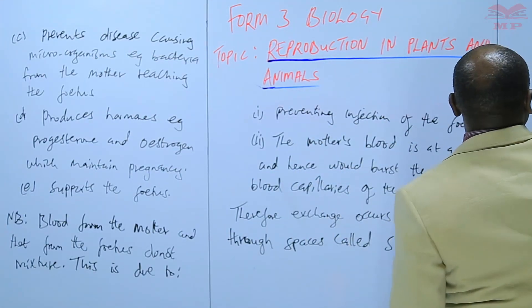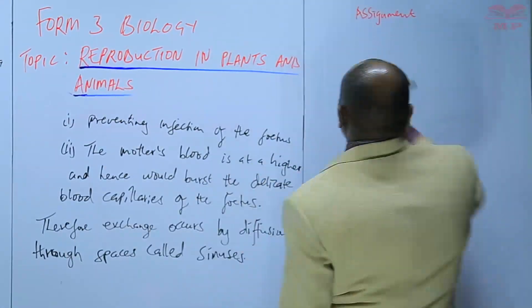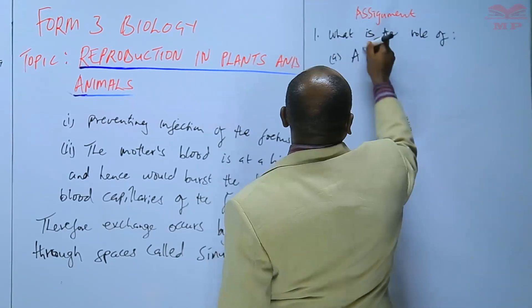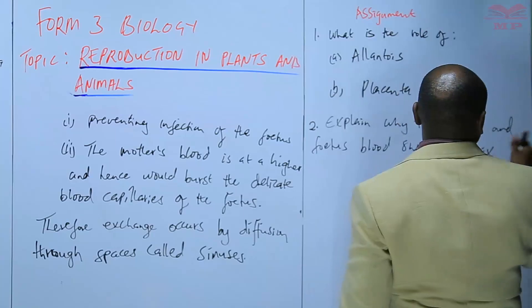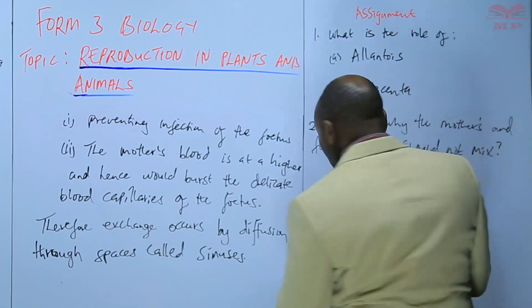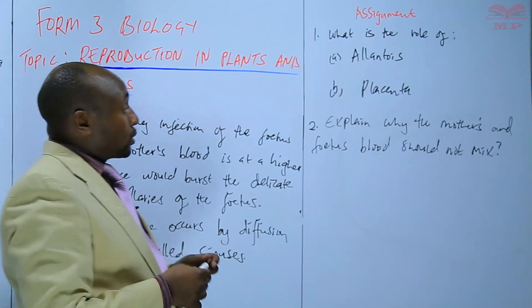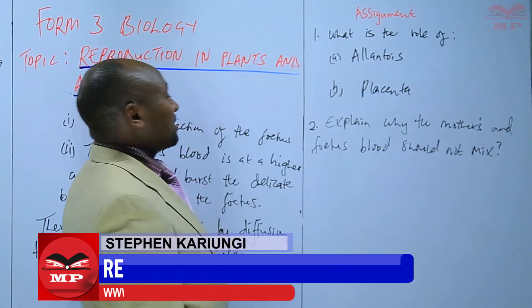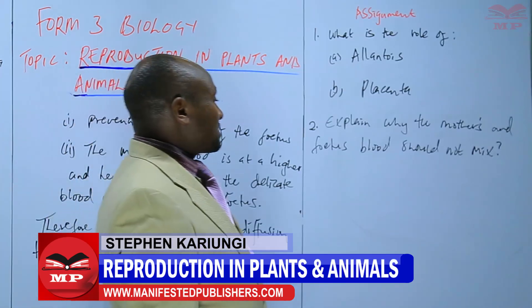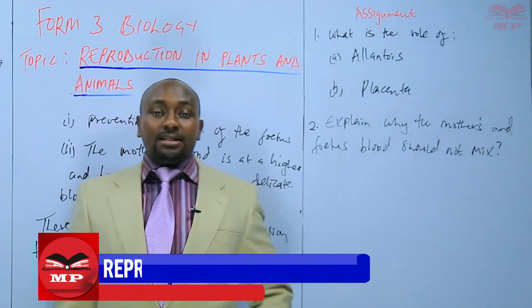We'll have an assignment on that. The first question: what is the role of the allantois? And secondly, the role of the placenta, and explain why the mother's and the fetus's blood should not mix. We're going to stop there until next time. Goodbye.